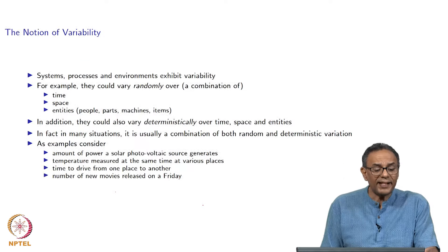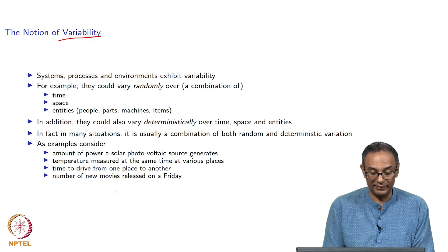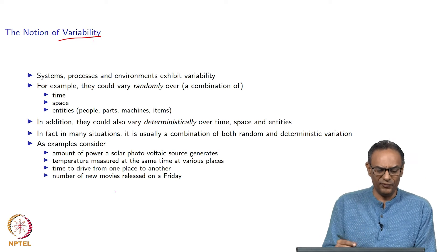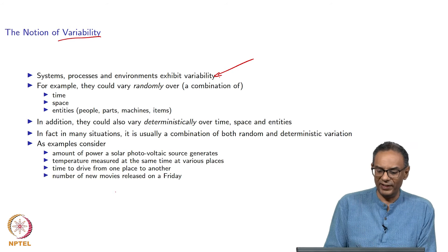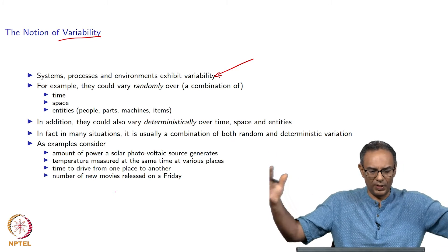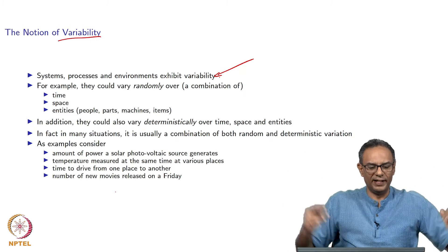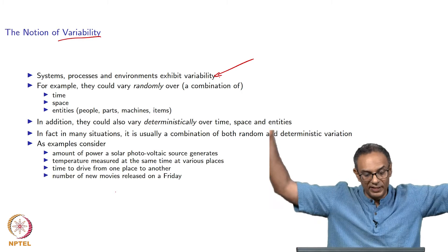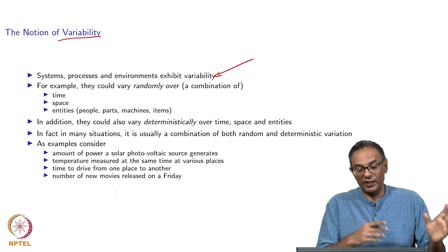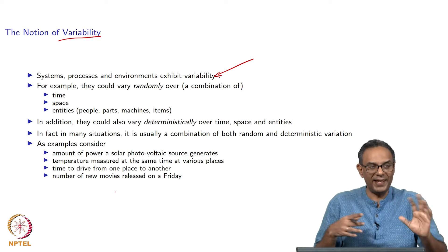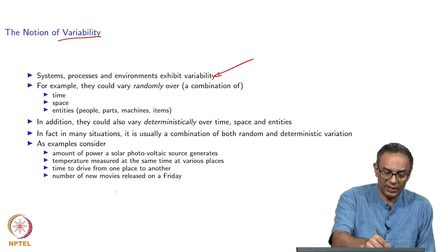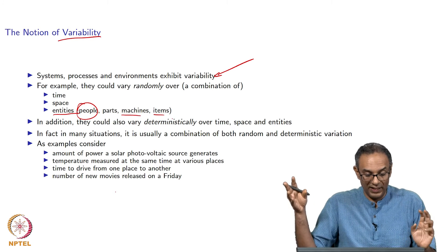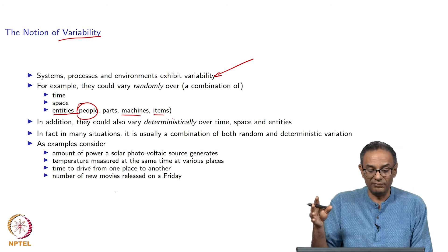We move to the next notion, which is that of variability. This is something that is commonly used — we will use the word random variables quite a bit in this course, so we want to talk a little bit about variability. Systems, processes, and environments — a system could be an entire manufacturing enterprise, a process could be something that a particular machine undergoes, an environment could be even larger than the enterprise — all these exhibit some amount of variability over time. They have variability across space or across locations. There is also variability across entities — people, parts made in manufacturing, the machines themselves, and the items made. All these things have a tremendous amount of variability.